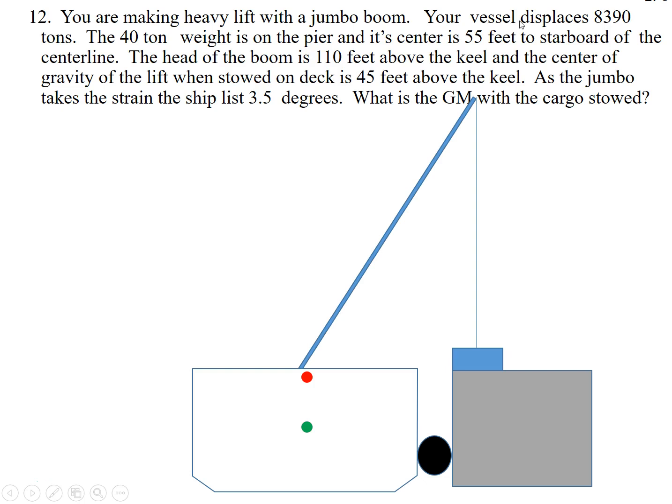The vessel displaces 8,390 tons. That's before the lift, and then we're going to lift a 40-ton weight. That weight is on the pier, and the distance from our center line to the weight, to the center of the weight on the pier is 55 feet. And the head of the boom from the keel up to the head block of the boom is 110 feet.